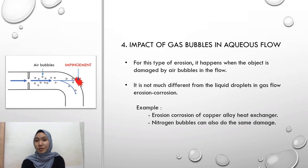Last but not least of the erosion corrosion mechanisms: the impact of gas bubbles in aqueous flow. This type of erosion happens when the object is damaged by air bubbles in the flow. It is not much different from liquid droplets in gas flow erosion corrosion. For example, erosion corrosion of copper alloy heat exchangers, and nitrogen bubbles can also cause the same damage.